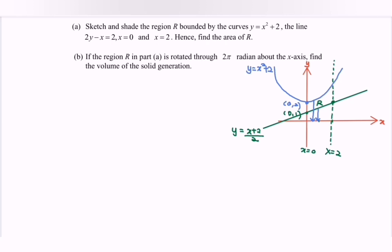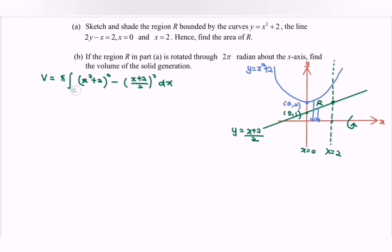For part (b), the region R is rotated through 2π radians about the x-axis — find the volume. Using the same concept of longest minus shortest, Volume = π ∫₀² [(x² + 2)² − ((x + 2)/2)²] dx.